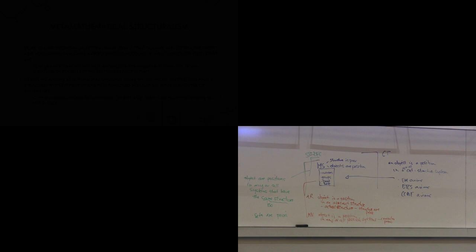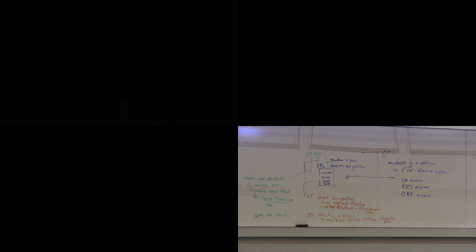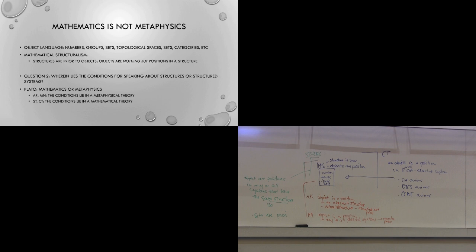Our object language — the things we're talking about — are numbers, groups, proofs, sets, topological spaces, even categories. If we want to talk about categories, let's use these axioms — those are the axioms for categories. So where lie the conditions for speaking about structures or structured systems? Plato presents us with this option: should we look for those conditions in mathematics or in metaphysics?